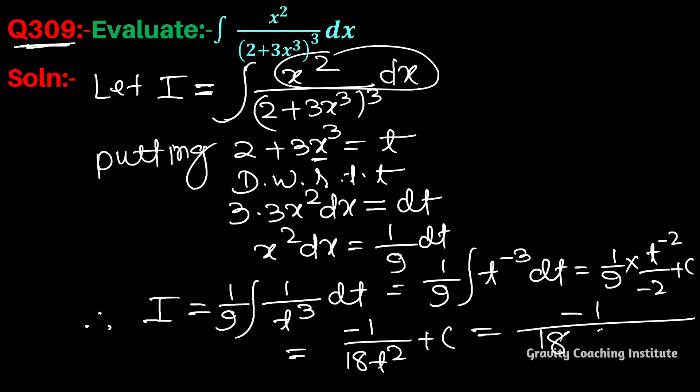Substituting back t equals 2 plus 3x cubed, the final answer is minus 1 by 18(2 plus 3x cubed) squared plus c.